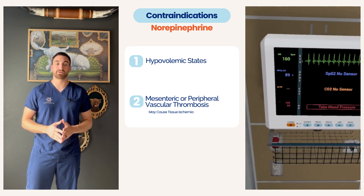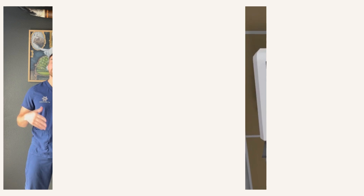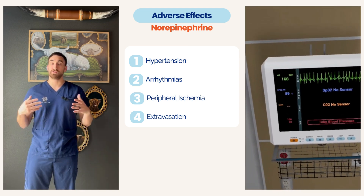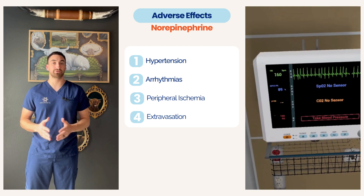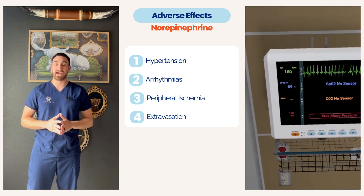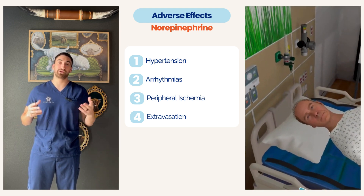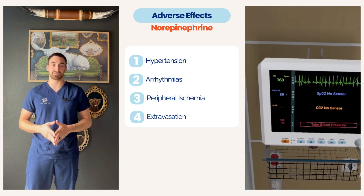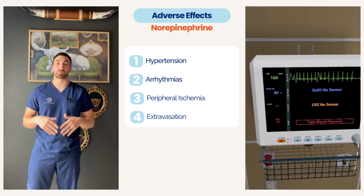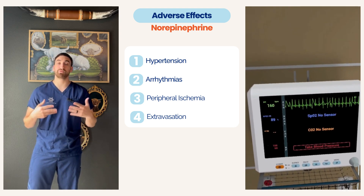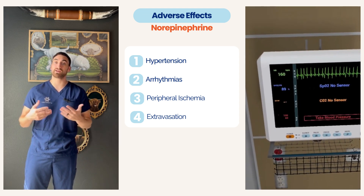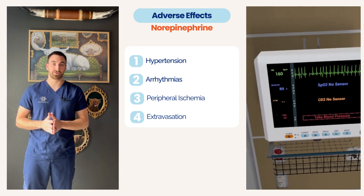It's important to note that norepinephrine can cause peripheral tissue injury if it leaks outside the vein, so we typically want to give it via a central line. A normal peripheral IV is typically contraindicated in most hospital systems — confirm with your hospital policy. Adverse effects include hypertension, so we don't want to give this to a patient who already has hypertension. Peripheral ischemia is also a risk if there's an underlying clot or vascular issue limiting circulation to a limb. We always want to watch carefully for arrhythmias, since it can increase heart rate and contractility by stimulating the beta-1 adrenergic receptor.